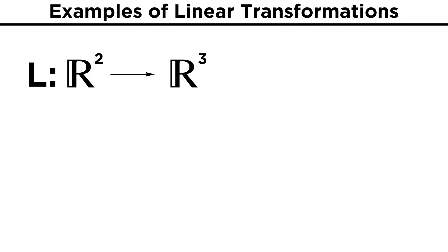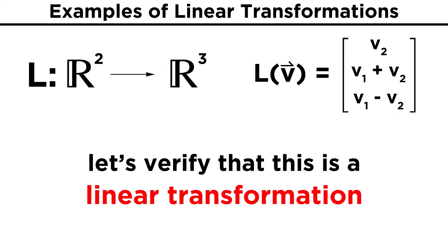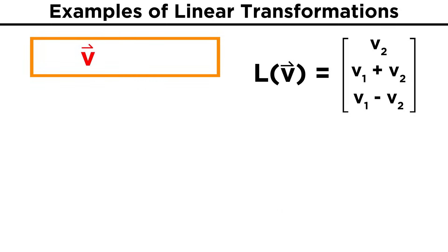As an example of what a linear transformation might look like, consider the mapping L: R2 → R3 given as follows. L(V) will take in vectors of length two, (V1, V2), and will give back vectors of length three given by (V2, V1+V2, V1−V2). Let's go ahead and verify that this is a linear transformation. First we will multiply the vector V by a scalar C, and see if the transformation of the product can be written as C·L(V).